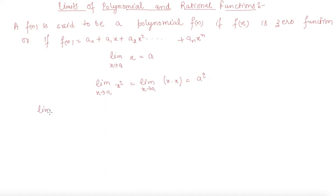Now let's say for this polynomial, limit x tends to a of f(x) is a₀ plus a₁x plus a₂x² plus aₙxⁿ. The limit will get separated.